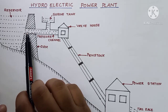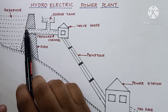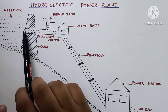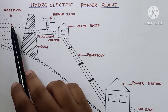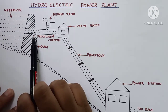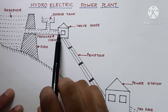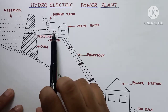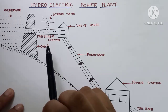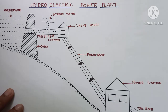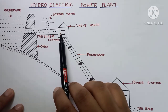From this reservoir, a pressure channel starts, carrying water to the wall house. At the starting point of this pressure channel there is a mechanism for filtering the water from unwanted things. The filtered water from this region enters through the pressure channel and reaches the wall house. Between these points, at the starting point of this pressure channel, there will be a surge tank — we will discuss the function of the surge tank after some time.